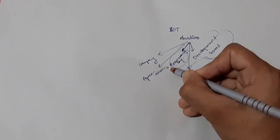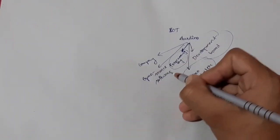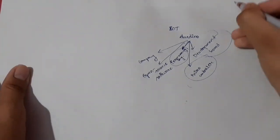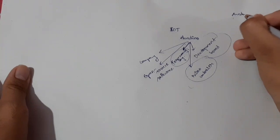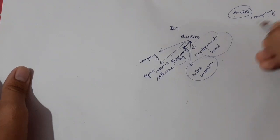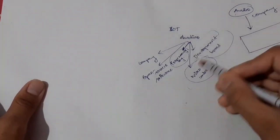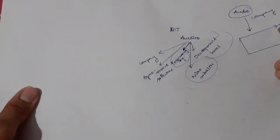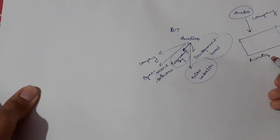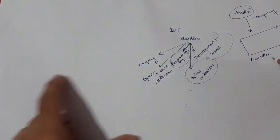All these — a development board, a microcontroller, a programming language, an open source software — can be called Arduino. So what is Arduino? Basically, Arduino is a company. This company designed a development board called Arduino. There are many such companies that make development boards.